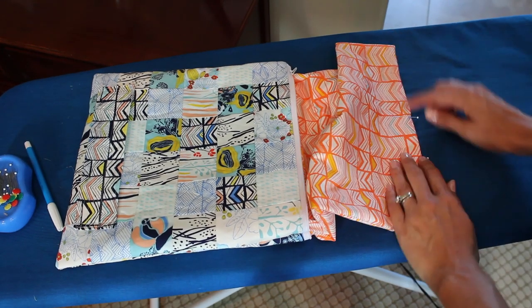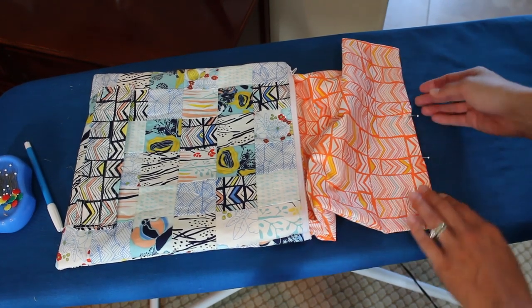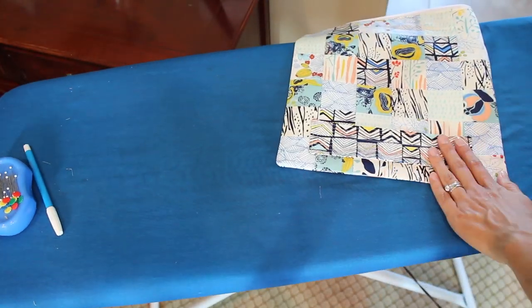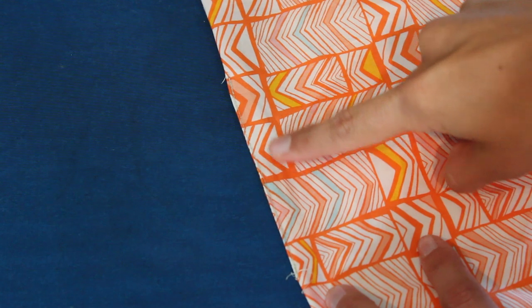Give that bottom piece a nice good press and pin that. We're going to stitch that closed. And also while you're at the ironing board, just go ahead and give the bag a nice good press. It always gives it such a nice finished look when you do that.